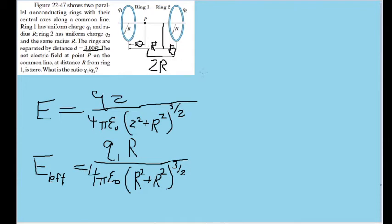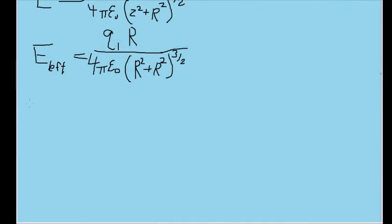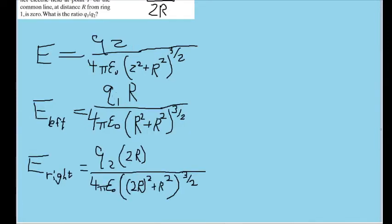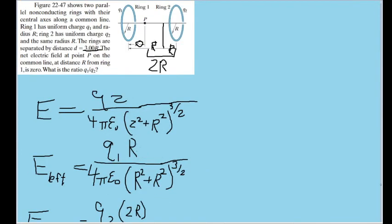And we can use this to find a formula for the electric field due to the right ring. And now for the electric field due to the right ring, I've subbed in 2r for z. And notice that I've also used q sub 1 and q sub 2 to refer to the charges due to those rings.